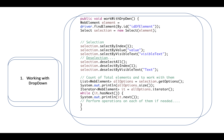How to work with dropdowns: use the Select class. You can perform selection using selectByIndex(), selectByValue(), or selectByVisibleText(). For deselection, use deselectAll(), deselectByIndex(), or deselectByVisibleText(). To get all the options available in a select tag, use select.getOptions() and store in a List of WebElement, then iterate to get information for each option.